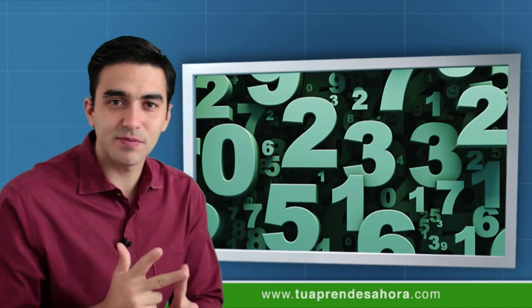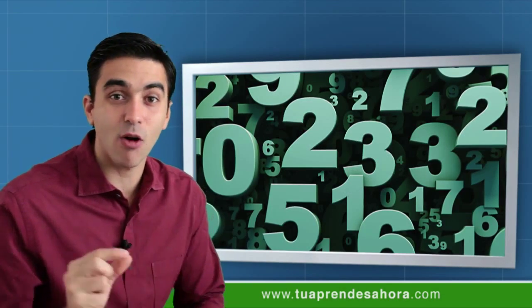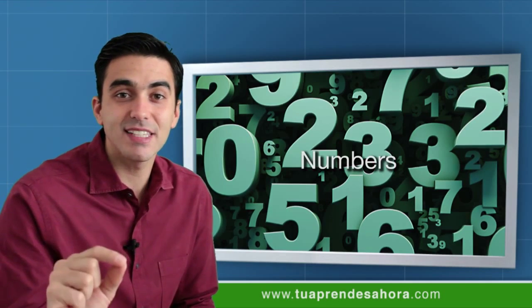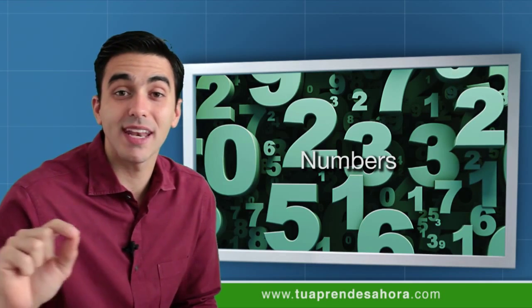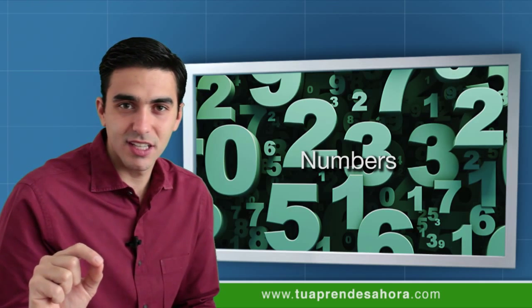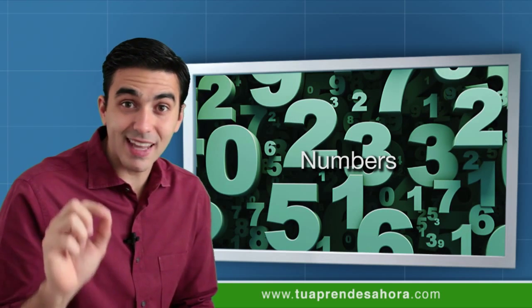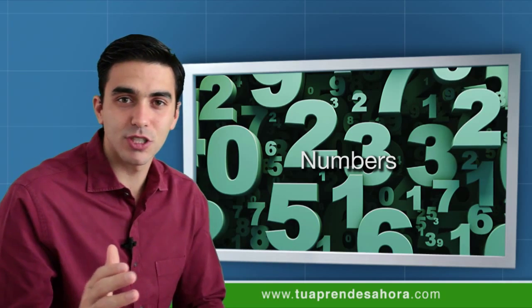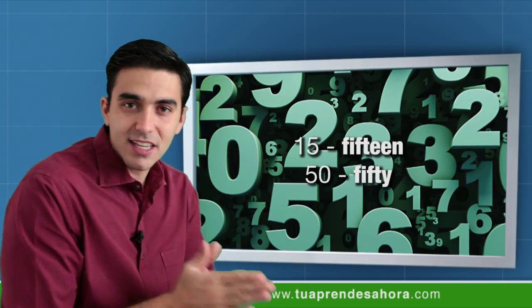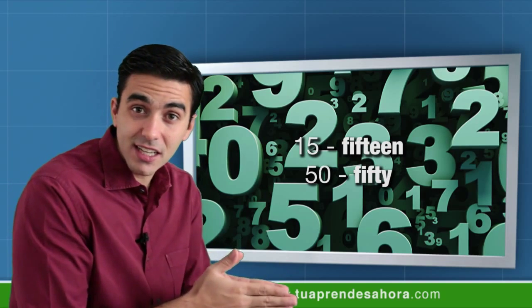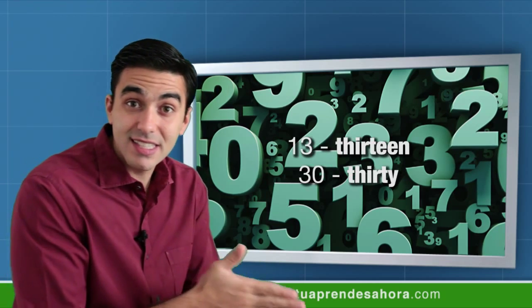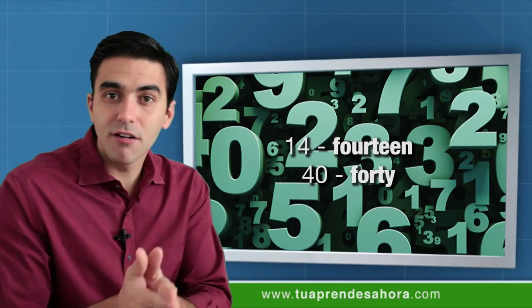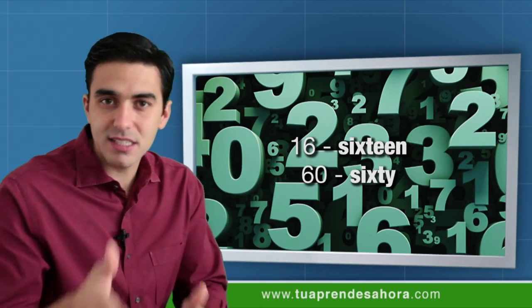Una tercera conversation strategy para confirmar lo que la persona dijo es relativo a numbers. Nosotros tendemos a confundir los números entre quince y cincuenta: fifteen and fifty, thirteen and thirty, fourteen and forty, sixteen and sixty.